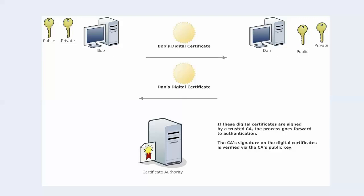There's another signature involved here, and it's actually on these certificates that the CA sent back to both Bob and Dan — that is the CA's signature. Because if a certificate authority says this is Sam and this is his FQDN and his IP address, then there's got to be a signature. These certificates are really contracts — it's almost like being a notary public, affixing a seal and saying I affix my seal to this. That's really what the signature is for the CA — it's affixing a signature saying yes, I am saying this person is who they are. And that particular signature is going to be verified using the CA's public key.